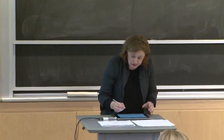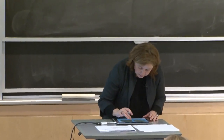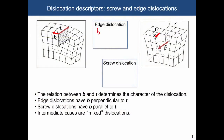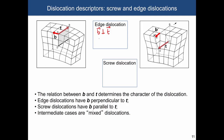For an edge dislocation, the Burgers vector is perpendicular to the dislocation line, and the dislocation line is perpendicular to the applied stress. For screw dislocations, the Burgers vector and the dislocation line are parallel to each other, and the dislocation line is parallel to the applied stress.